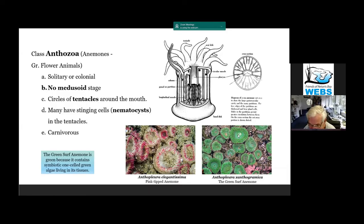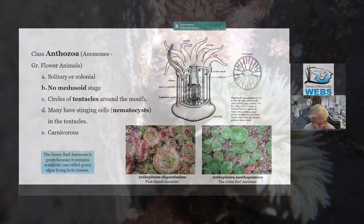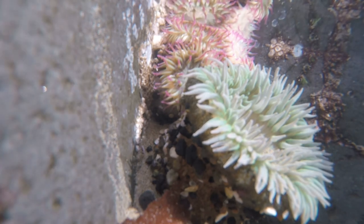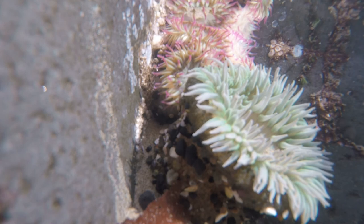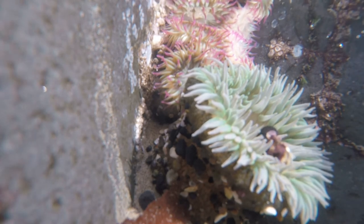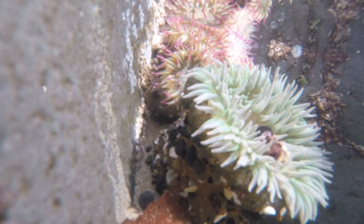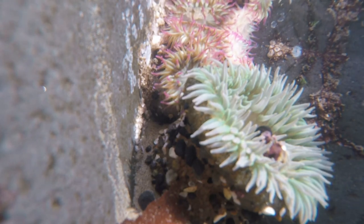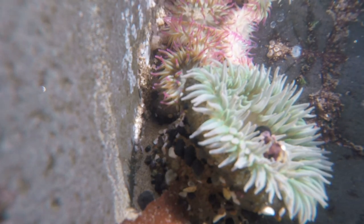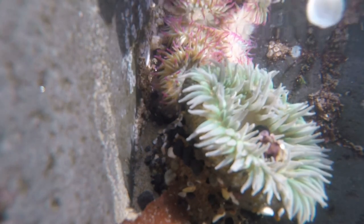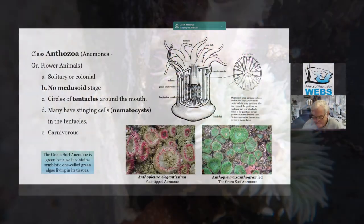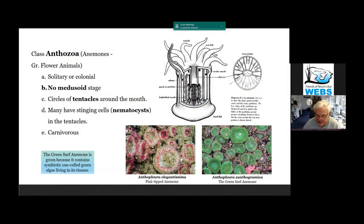The green one is green because it contains a symbiotic single-celled green alga living in its tissues. This is a truly mutualistic arrangement between the algae and the anemone in that they both benefit: the anemone gives the algae a place to live, and the algae photosynthesize and actually supply some of the food to the anemone.